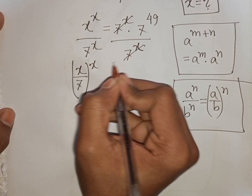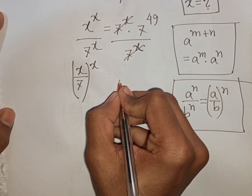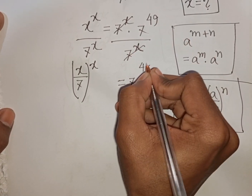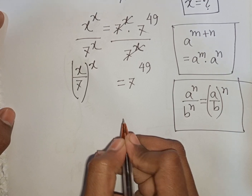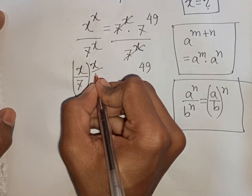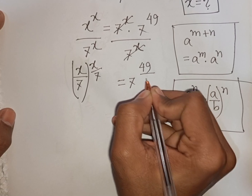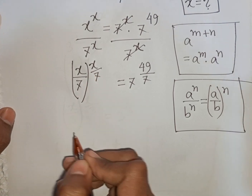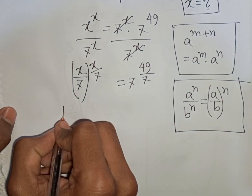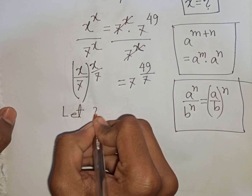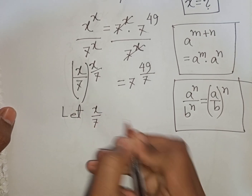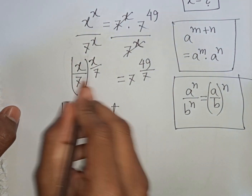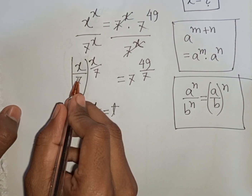So (x/7)^x = 7^49. Now we divide both sides by 7. We see x/7 appears on both sides, so let t = x/7 as a substitution, giving us t^t on the left side.